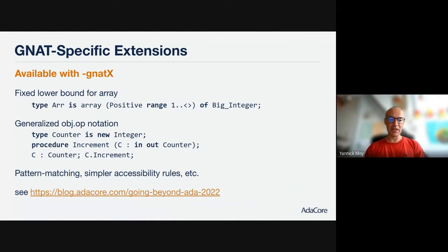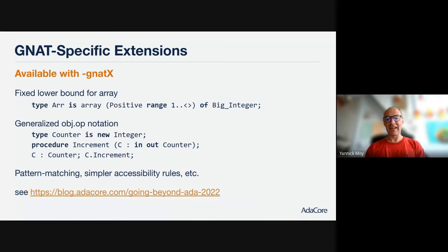Another interesting extension is the generalized dot-notation. You can now call operations with dot notation on any primitive operation of a type — you no longer need the type to be tagged. The sometimes bad practice of adding tagged records where a simple record would be sufficient, just to have object notation, is no longer needed. So here, with just a type Counter which is an integer type, you can call c.Increment on an object C.